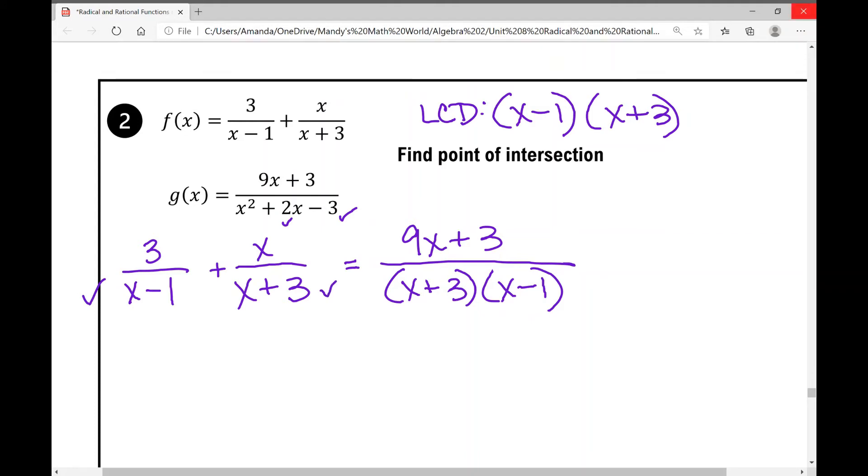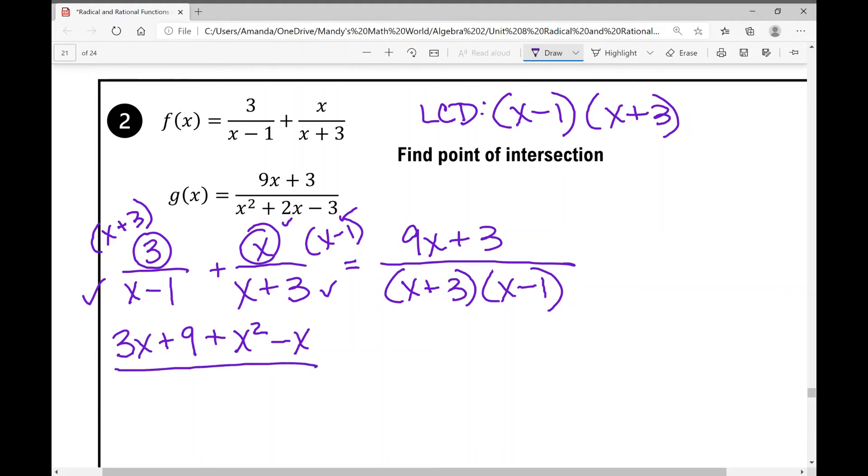Well, the one on the left, I need to multiply that numerator times x plus 3, and the one on the right, I need to multiply that numerator times x minus 1. So when I do that, watch how I write this. The first thing I'm going to do is I'm going to distribute this 3 to the inside of the parentheses over here, and I get 3x plus 9. And then in my fraction on the right, I'm going to distribute this x into each term in those parentheses, x minus 1. So I get plus x squared minus x over x minus 1 times x plus 3